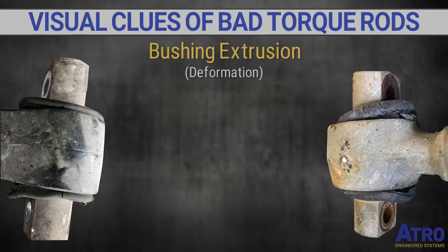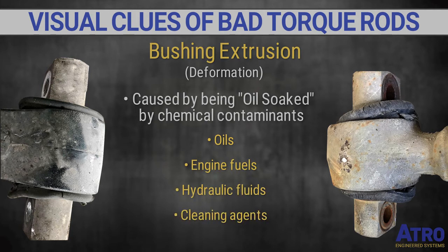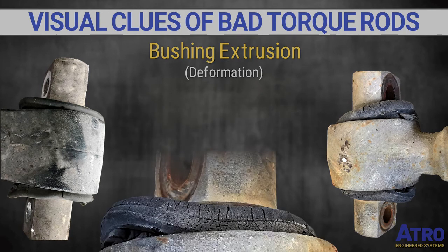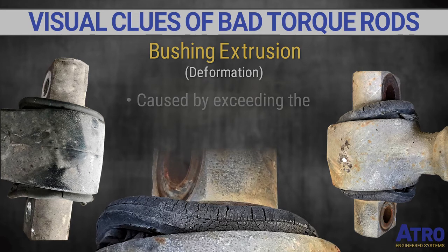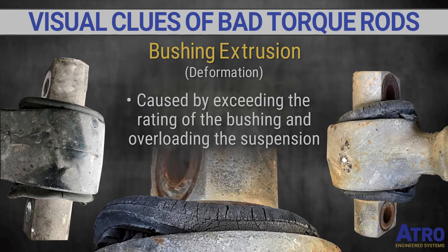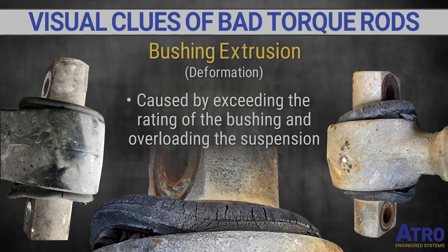Bushing extrusion, also called deformation, is often caused by a condition known as oil-soaked, which can happen when the rubber comes in prolonged contact with chemical agents. The rubber becomes soft and pliable, and the weight of the truck extrudes it out the sides of the bushing. Extrusion can also be caused by exceeding the rating of the bushing — overloading the suspension can actually push the rubber out of the bushing.